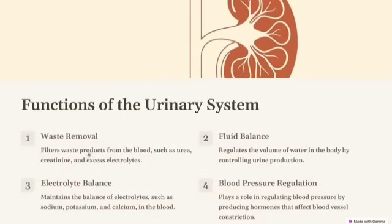The functions of the urinary system include: waste removal — filtering waste products such as urea, creatinine, and excess electrolytes from the blood; fluid balance — regulating the volume of water in the body by controlling urine production; electrolyte balance — maintaining levels of sodium, potassium, and calcium in the blood; and blood pressure regulation — producing hormones that affect blood vessel concentration.